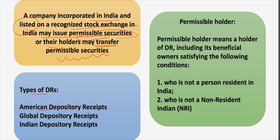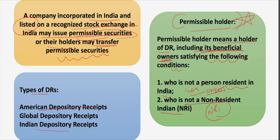There are three types of depository receipts: American Depository Receipts (ADRs), where an Indian company raises money from American investors; Global DRs, where an Indian company raises money from investors in America and European countries; and IDRs, where a foreign company raises money from Indian investors. Importantly, a permissible holder of a DR must not be a person resident in India — meaning Indian citizens — and must not be an NRI. These two categories have been barred by SEBI to hold depository receipts issued by locally listed companies.